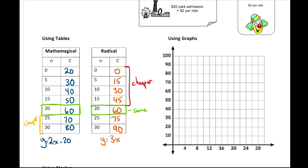Looking at this scenario between the two parks, there appear to be three different options for which one is cheaper. Anywhere from zero to 20 rides, Radical Island is cheaper. At 20 rides, it doesn't matter which one you go to — it's the same. And if you go more than 20 rides, Math Magical World is going to be cheaper. So there are three different scenarios, and we can see that from the table.